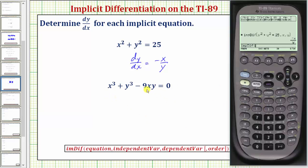But we do need to enter x, y as x times y. So we have x raised to the power of three plus y raised to the power of three minus nine x times y equals zero.